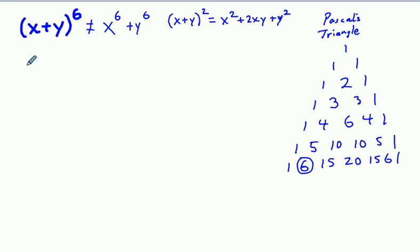So first to write this out, we're going to just use the pattern of expansion. We have some coefficient times x to the sixth power, y to the zero power, plus some coefficient x to the fifth power, y to the first power.